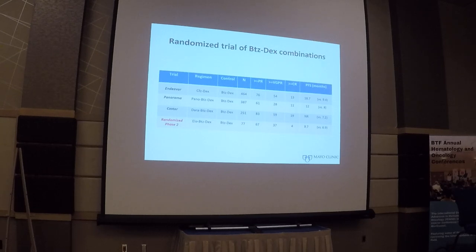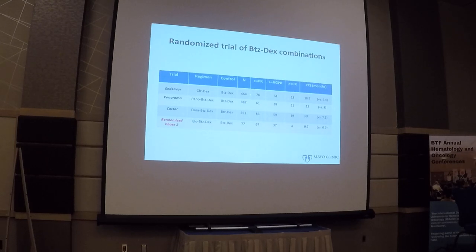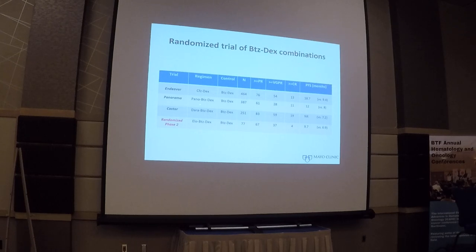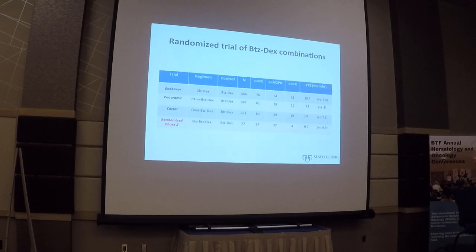Looking at the randomized trials that inform us about len-refractory patients, we have three Phase 3 trials and one randomized Phase 2 trial examining therapies without lenalidomide as the standard arm. The ENDEAVOR trial compared carfilzomib-dexamethasone versus bortezomib-dexamethasone, demonstrating OS and PFS improvement. The PANORAMA trial added panobinostat to bortezomib-dexamethasone, showing a 3-4 month PFS improvement but no OS benefit. The CASTOR trial showed PFS improvement with daratumumab plus bortezomib-dexamethasone, and the elotuzumab-bortezomib-dex trial also showed PFS improvement in a randomized Phase 2. We have several options for len-refractory patients at first relapse.